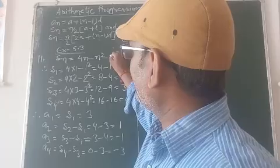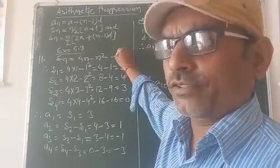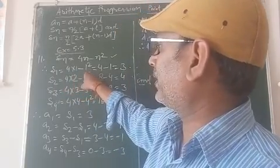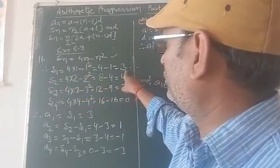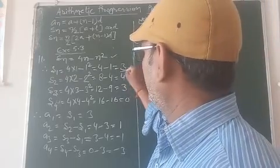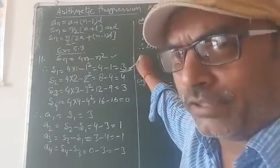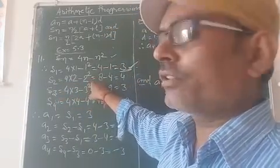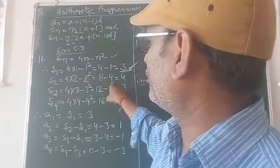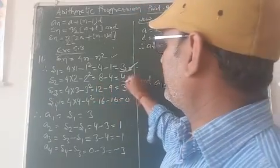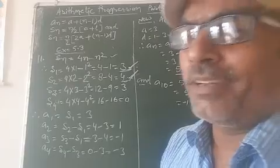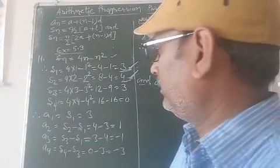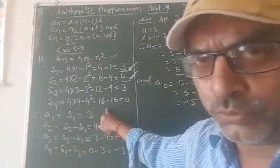Here Sn equals 4n minus n square. Therefore, S1 equals 4 into 1 minus 1 squared equals 4 minus 1 equals 3. Thus, we find the first answer S1. Then S2 equals 4 into 2 minus 2 squared equals 8 minus 4 equals 4. Similarly, we find S3 and S4. Therefore, the first term equals S1 equals 3.